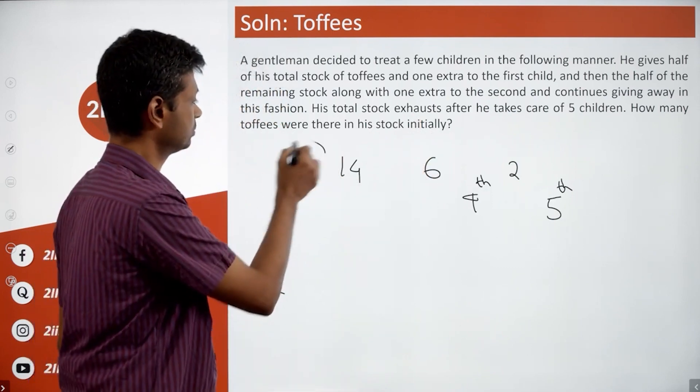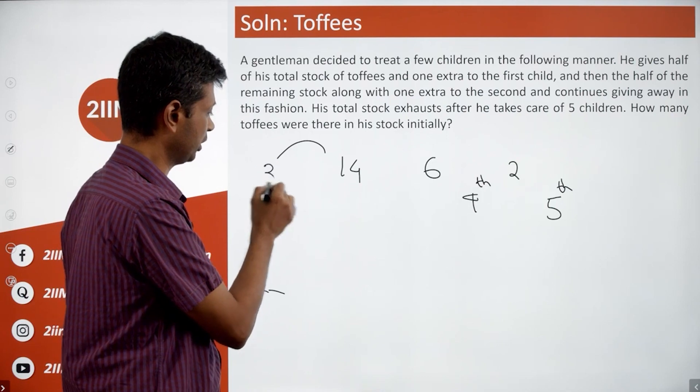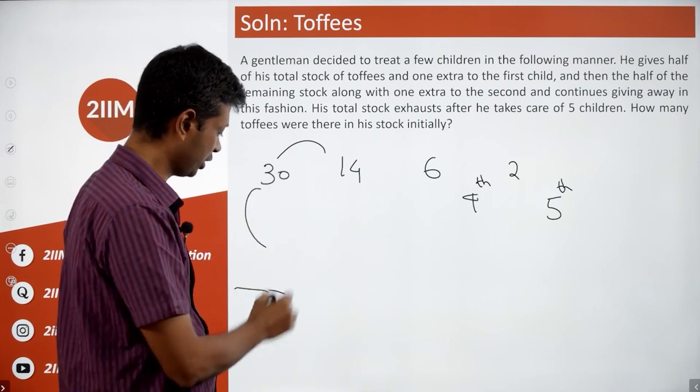To fourteen, add one into two is thirty. To thirty, add one into two is sixty-two.